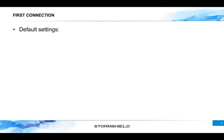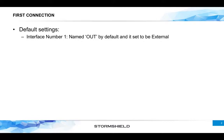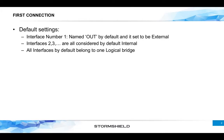The default settings you need to know for the first time you connect to the firewall: port number one is considered the external interface, called by default the 'out' interface. All these settings can be modified later. Port numbers two, three, and all remaining ports are considered internal interfaces. All interfaces by default belong to one bridge, and the first connection should be made to internal interfaces only — port number two, three, and so forth.